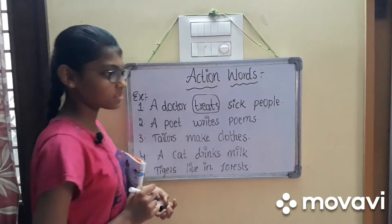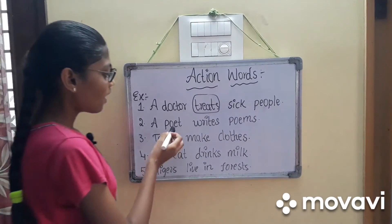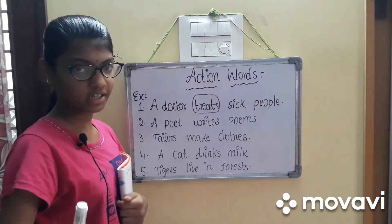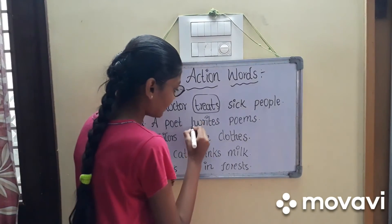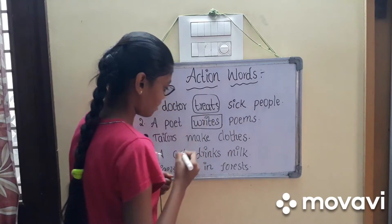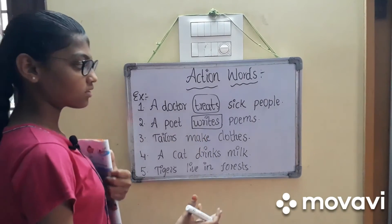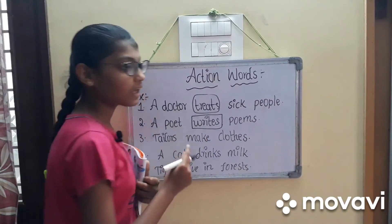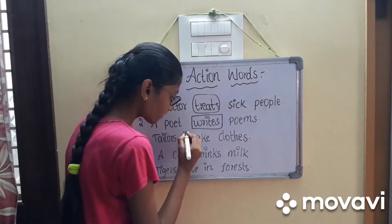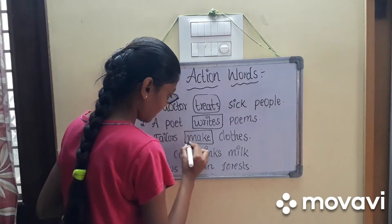Next, a poet writes poems — the poet is writing, so write is the action word. Next, tailors make clothes — the tailor makes clothes, so making is the action word.